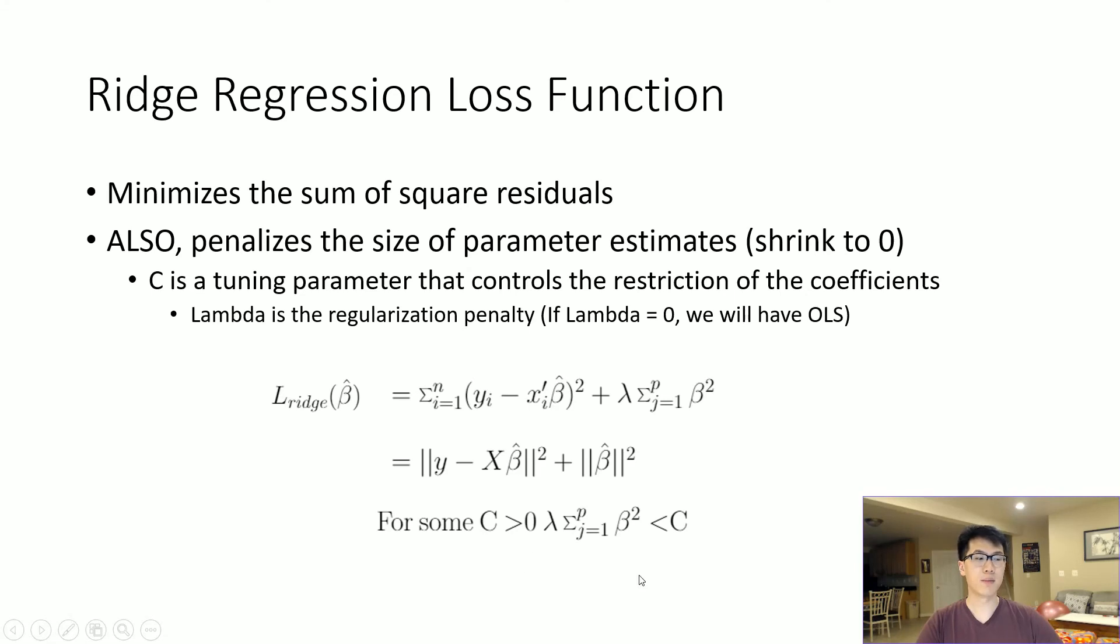We can set some limitation for our C value, which is our constraint or controlling parameter—greater than zero. We want to minimize this entire value with this constraint. Note that when we set lambda equal to zero, we get the same equation as the linear regression model.